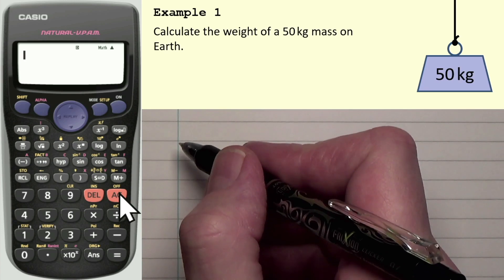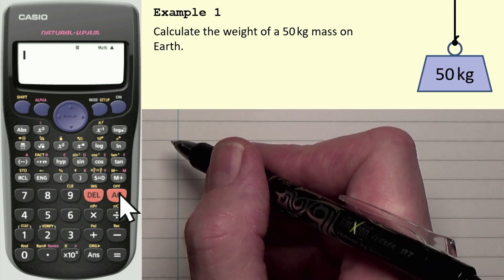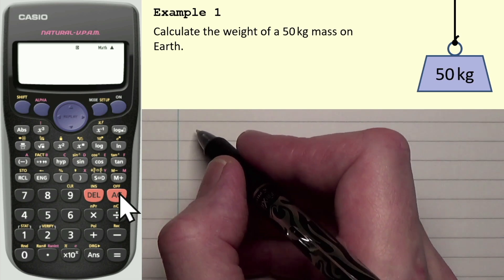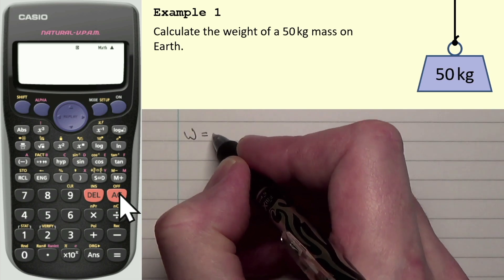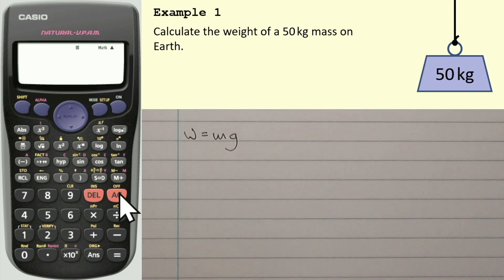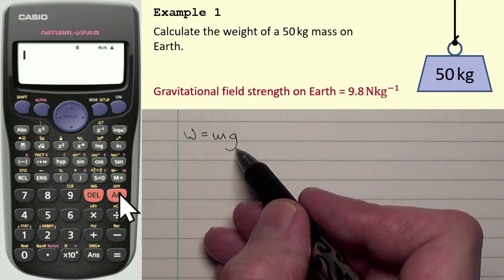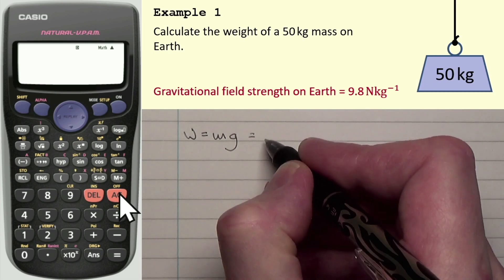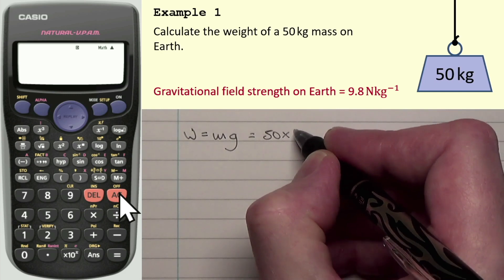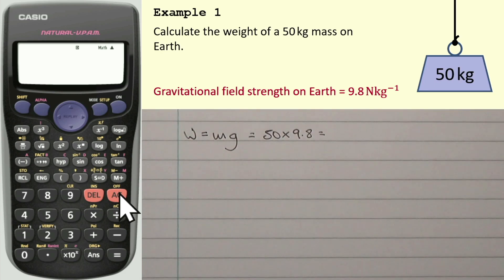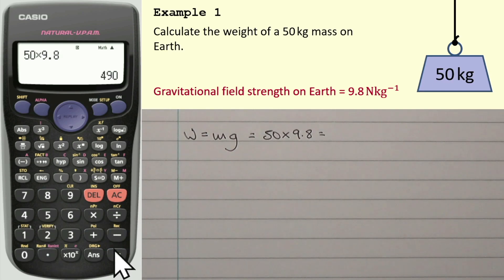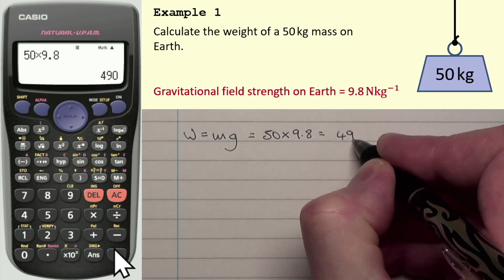That question says, calculate the weight of a 50 kilograms mass on Earth. Don't worry if you don't know this equation. The equation to use is W, which is weight, equals M, mass, times gravitational field strength. At the very start of the exam, just after the first page, is the data sheet, and within that data sheet it gives you the value of G, gravitational field strength, which is 9.8. So we know mass is 50, G is 9.8, and to calculate the final answer we multiply 50 times 9.8, which gives us 490 newtons.